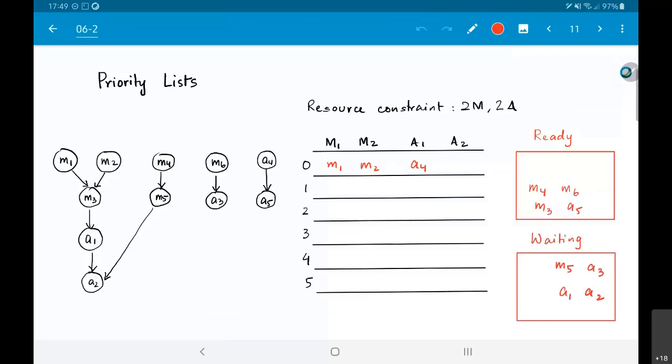So, let's get back to the differential equation solver that we looked at last time. If you recall, we had a problem where the first set of elements to be put in, M1, M2, A4, we pretty much had no doubts about what to put in place. M1 and M2 are on the critical path, they seem to be the most important operations.